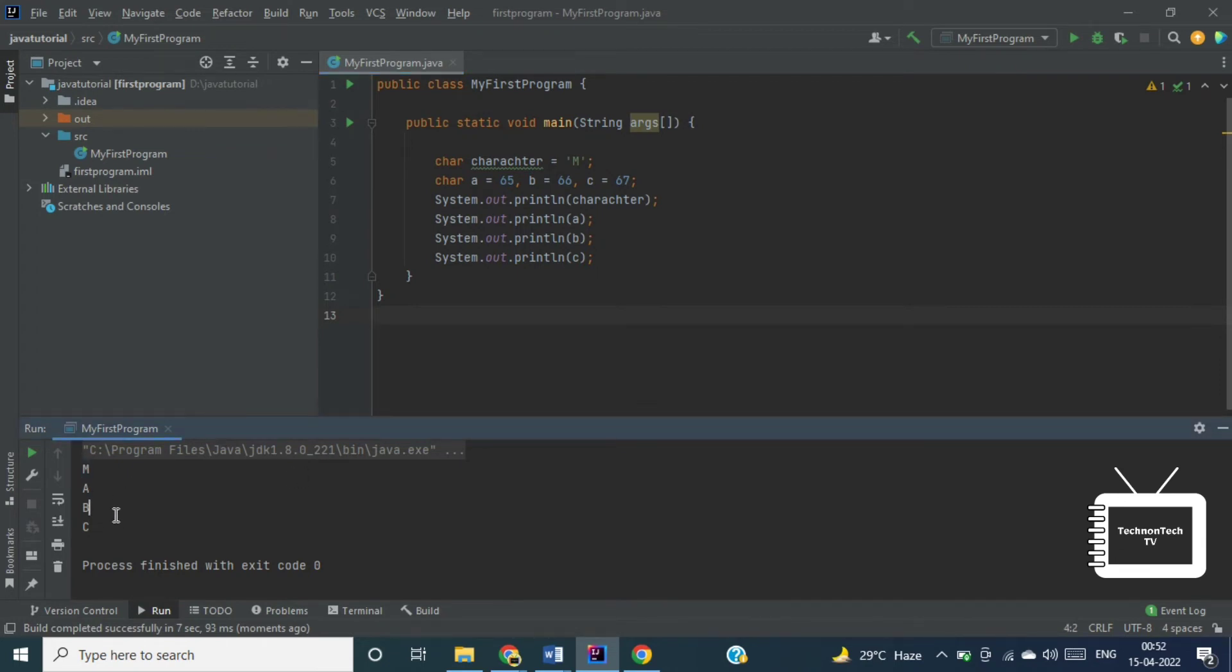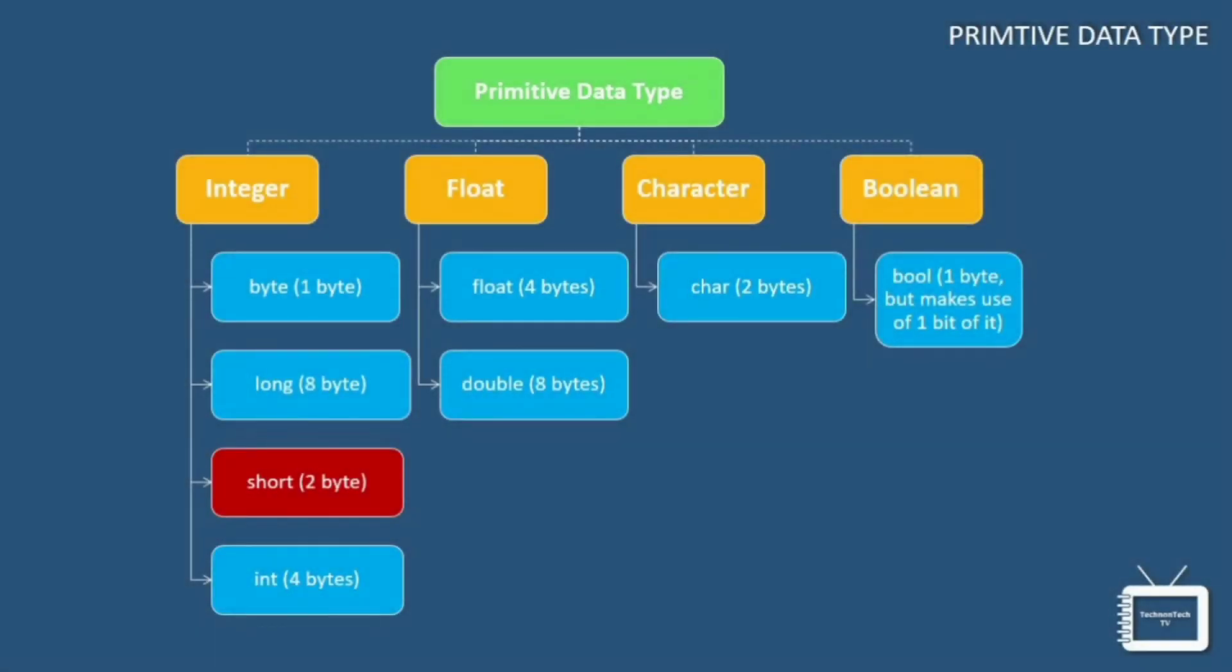So here we can see the output. So here we have used ASCII values to display certain characters. Now let's move further and understand the next data type on the list that is short data type. So short data type is greater than byte in terms of size and less than an integer.